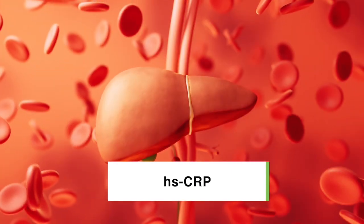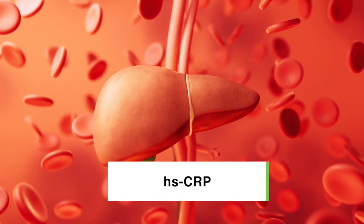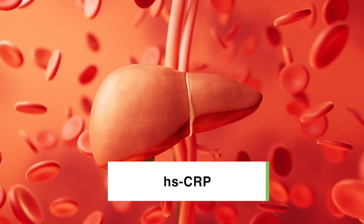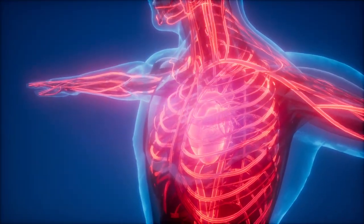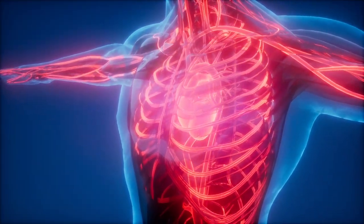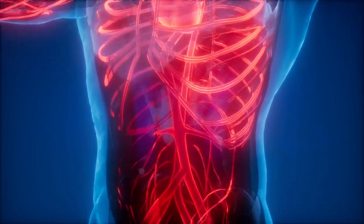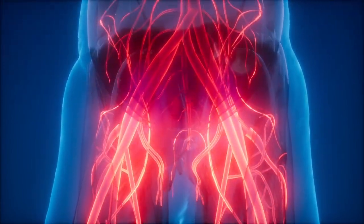CRP is a protein that is made in the liver in response to inflammation. What does a CRP tell you? That's the big question. There's a few things. One of the things you look at is cardiovascular, and that's kind of what we're talking about today — how it affects the cardiovascular system.